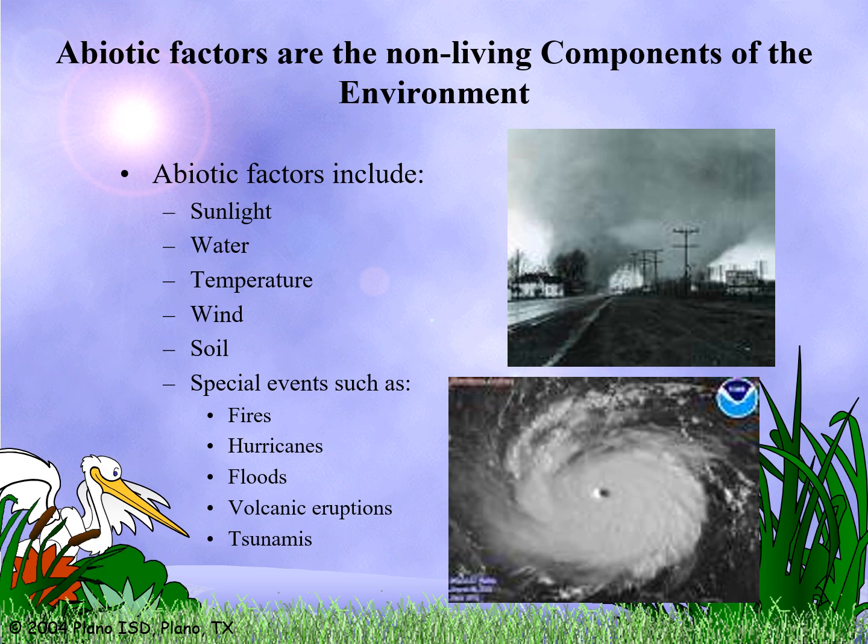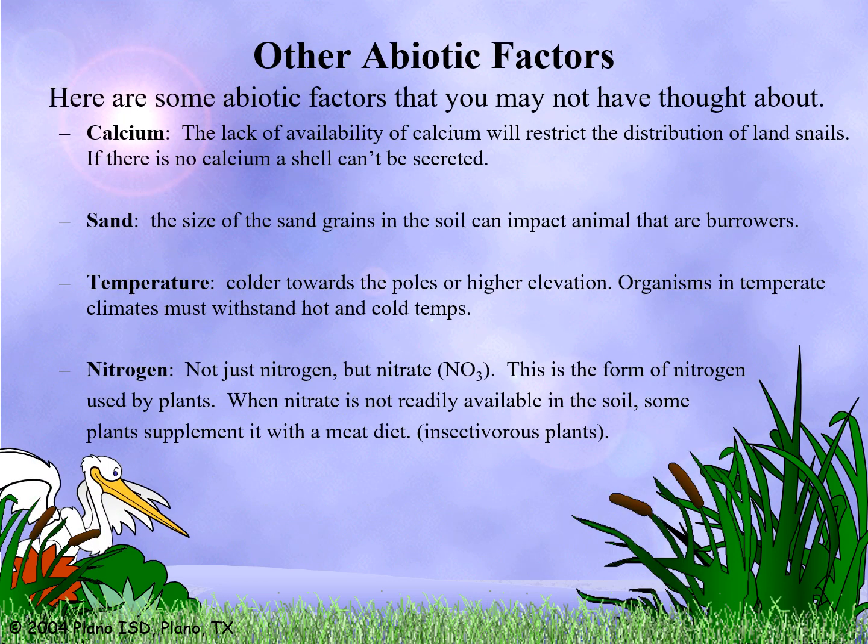More examples of abiotic factors are fires, hurricanes, floods, volcanic eruptions, and tsunamis. There are also chemical abiotic factors such as calcium, sand, temperature, and nitrogen.